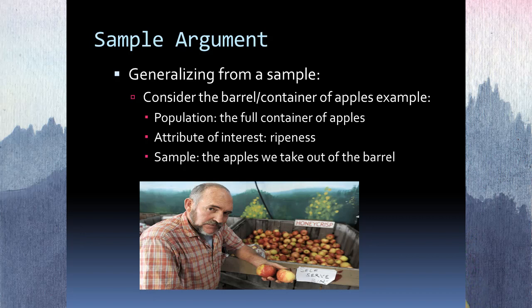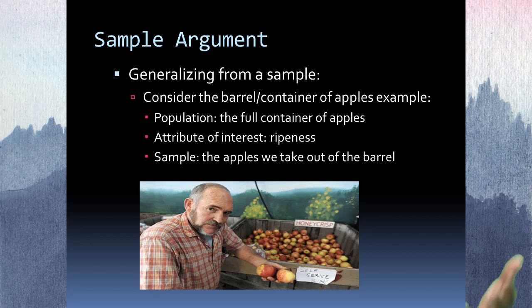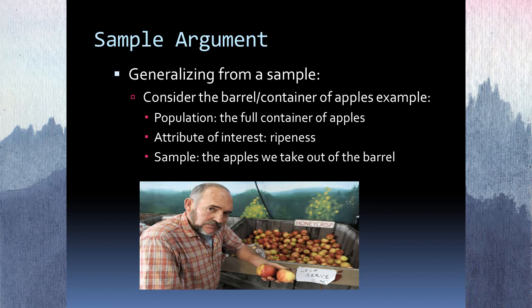The attribute of interest is the thing you're trying to figure out. Some students are confused about this, but the attribute is whatever the arguer decides it is — it's arbitrary on some level. In the example I gave, I said rottenness, but in this PowerPoint I have ripeness. I could equally have said redness — whatever the researcher decides, that's the attribute.